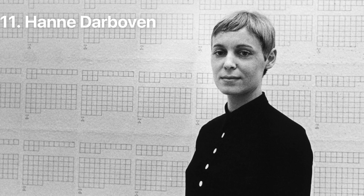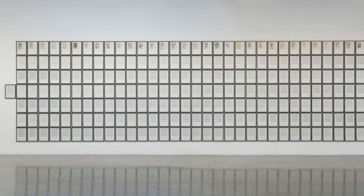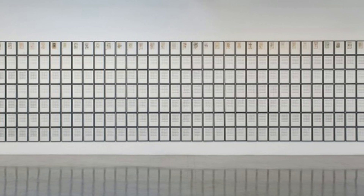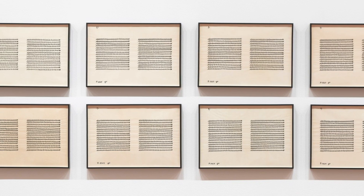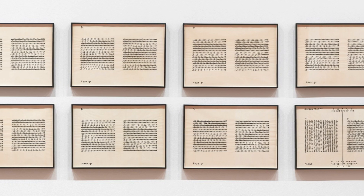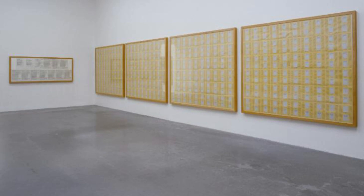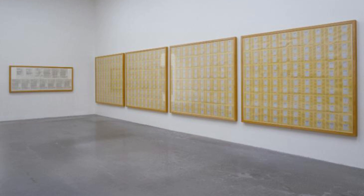Number eleven: Hanne Darboven. Born in 1941 in Munich, the German conceptual artist Hanne Darboven passed away in Hamburg in 2009. Shortly after completing her studies in painting in Germany, Darboven moved to New York where she established herself as a key figure of conceptual art. Her works are marked by language encompassing numbers, allowing her to examine time in a neutral language. She is best known for works in which she showcases the passage of time with calendar-like works on paper.